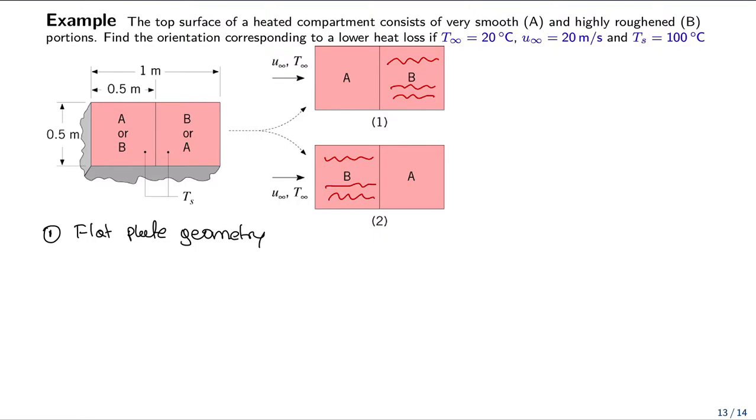Our second step is to compute the film temperature. The film temperature Tf is equal to 100 plus 20 divided by 2, which is equal to 60 Celsius, or that will be equal to 60 plus 273, 333 Kelvin.